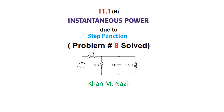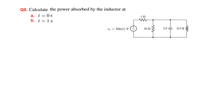Bismillahirrahmanirrahim. In this video on instantaneous power due to step function, we will be solving problem number 8 from the end of the chapter. The question asks us to calculate the power absorbed by the inductor at t equal to 0 and t equal to 1. This is the circuit given.